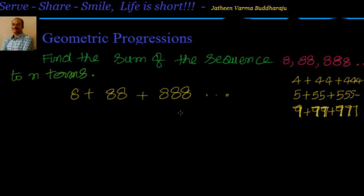Now let's look at this sequence: 8, 88, 888. You can see very clearly they are not in arithmetic progression and they are not in geometric progression. But you can see that if you try to find the ratio approximately between them — 88 divided by 8 is 11, and 888 is nothing but approximately 10 times 88. So there is some geometric progression involved somewhere.